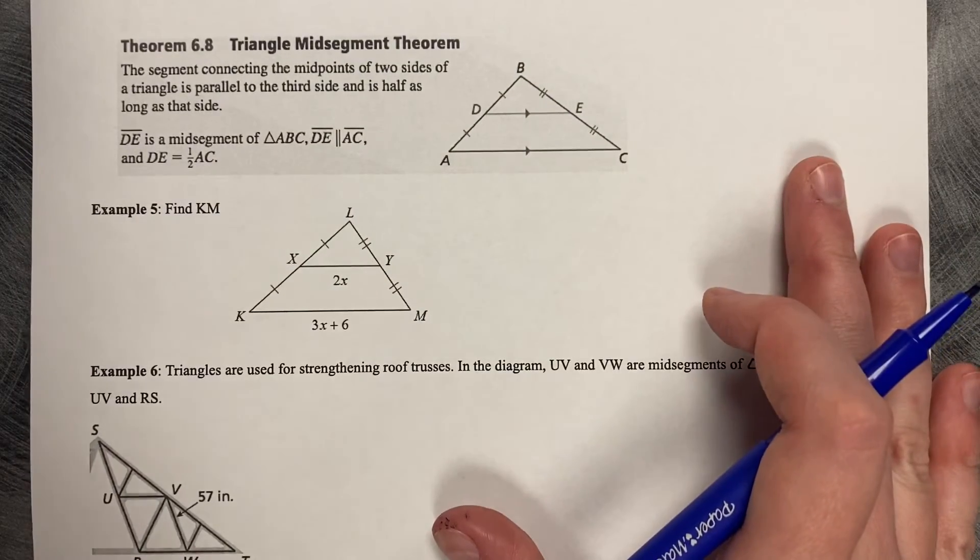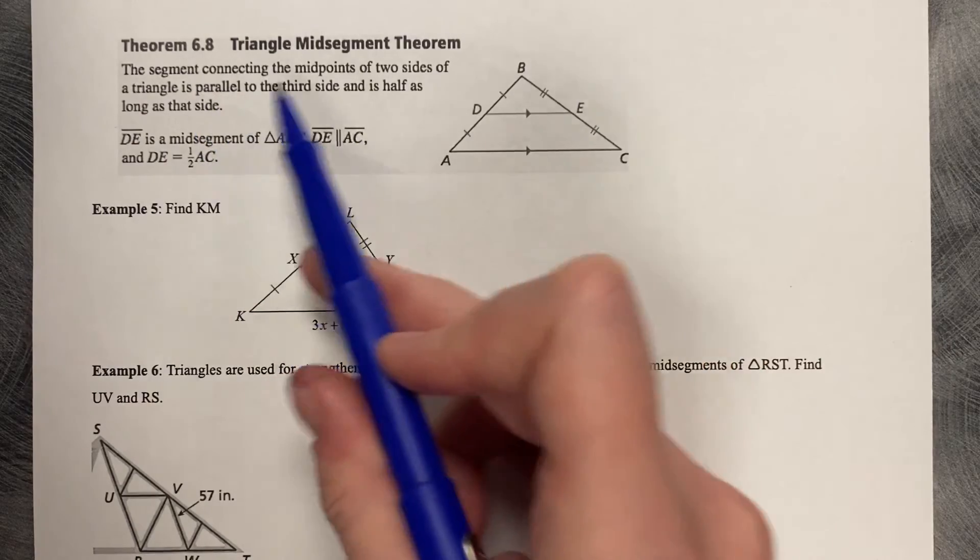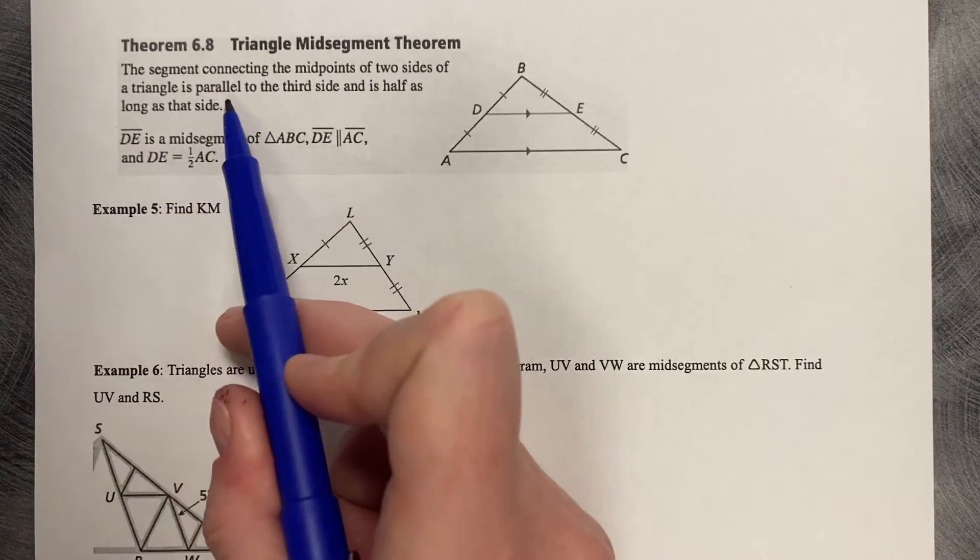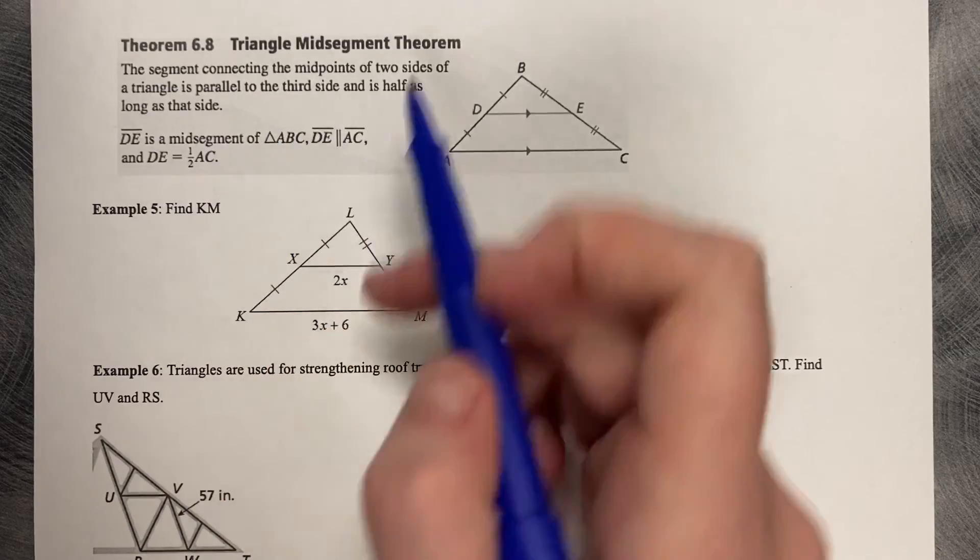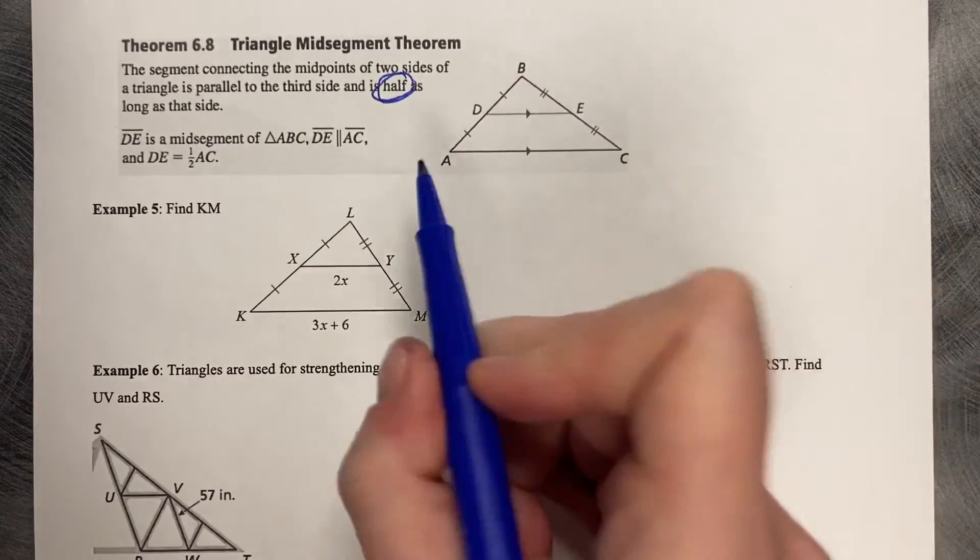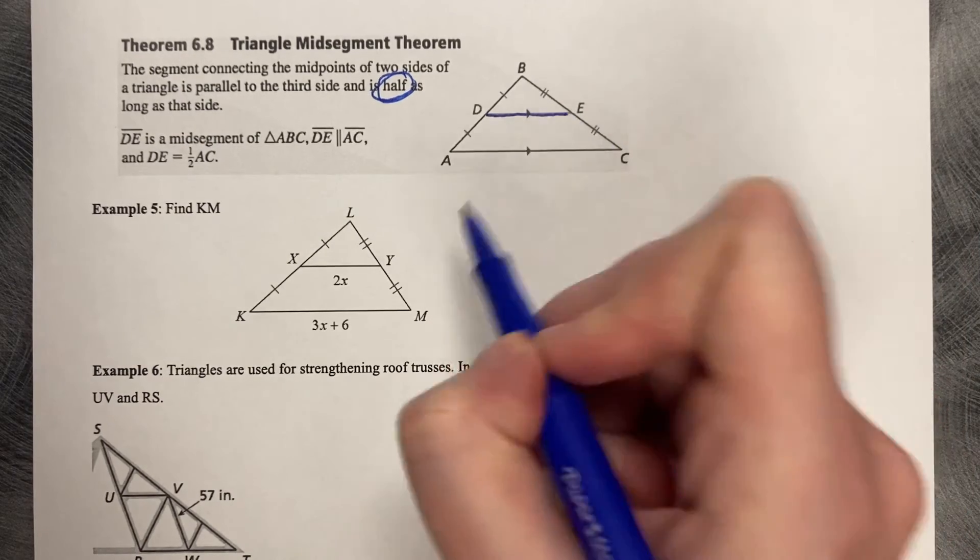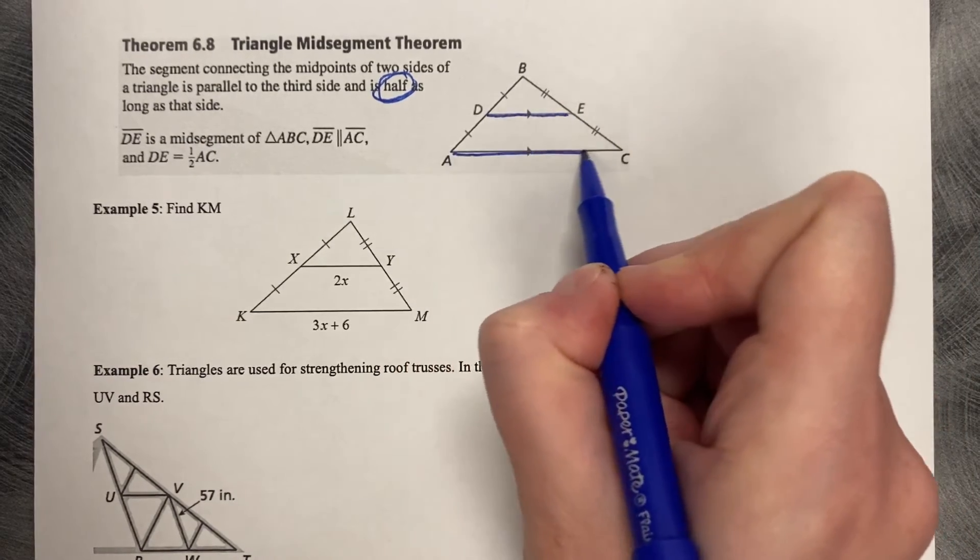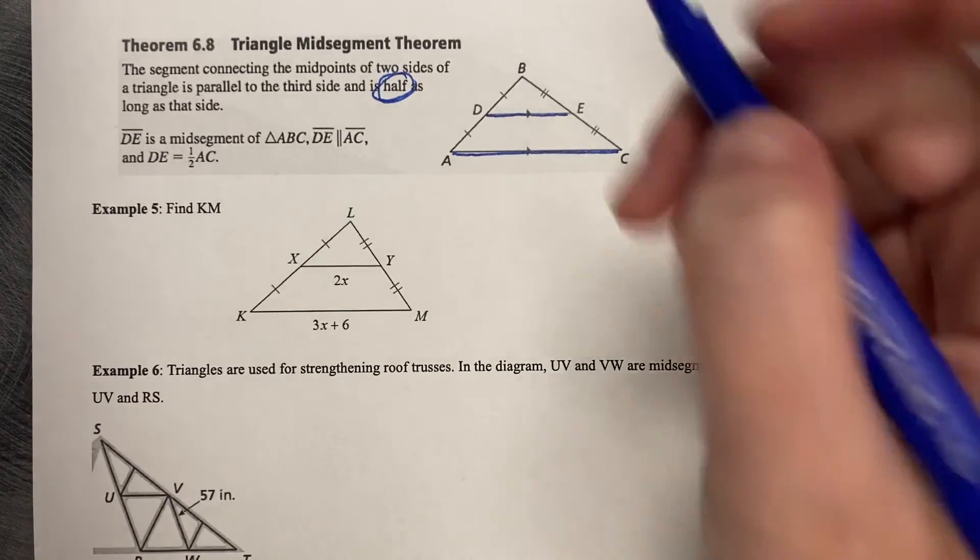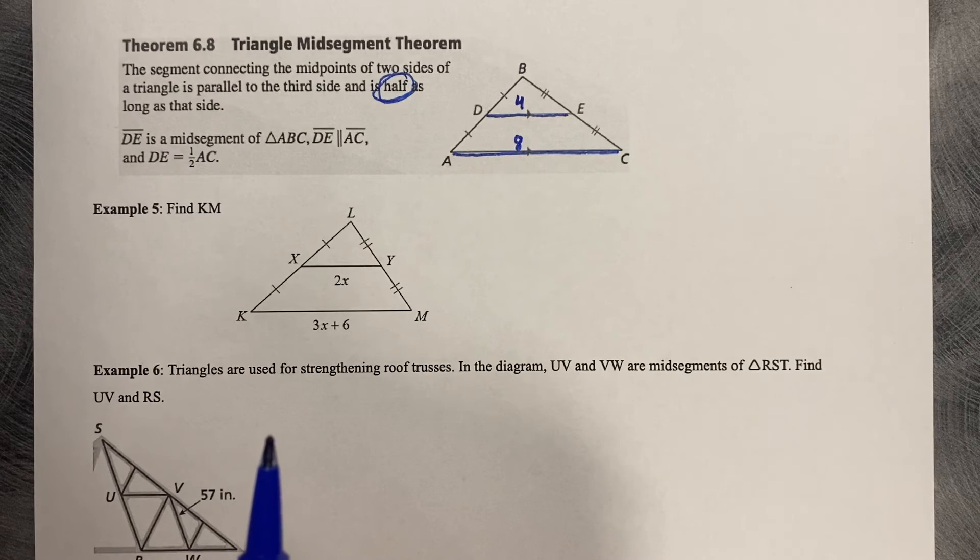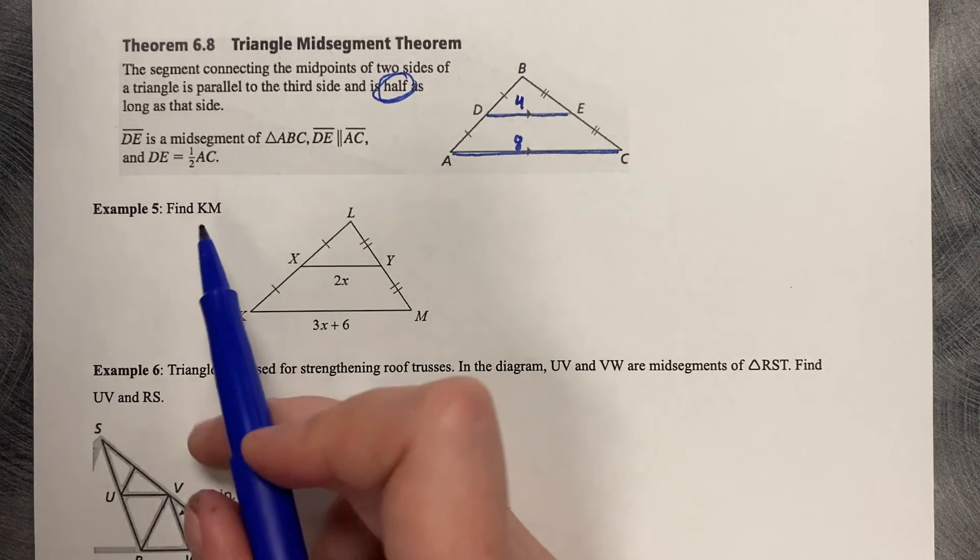Another theorem for mid-segments: the segment that contains the midpoint of the two sides is parallel, we just proved that, to the third side, and half as long as the opposite side. So that means that DE is half the size of AC. So if we put numbers on this, if this was four, then that length would be eight.